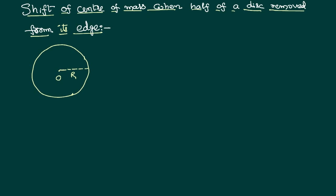Now, from this disc, if we remove a portion of the mass, how does the center of mass shift? We want to calculate that. Let the removed portion have a diameter R, meaning a radius R/2. If we show it in the diagram, the shadowed portion of the disc is removed from the existing disc.